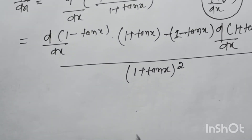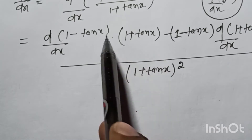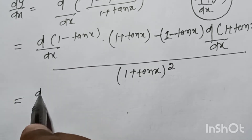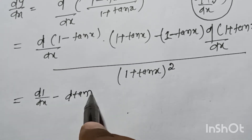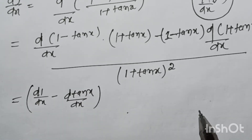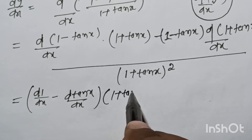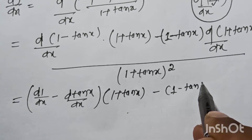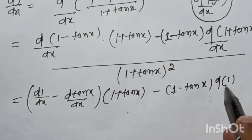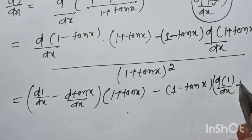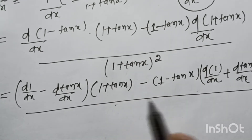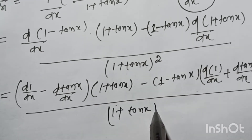Expanding: derivative of d(1)/dx minus d(tan x)/dx, times (1 plus tan x), minus (1 minus tan x) times d(1)/dx plus d(tan x)/dx, all divided by (1 plus tan x) to the power 2.